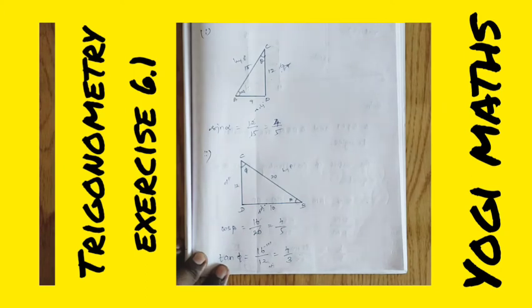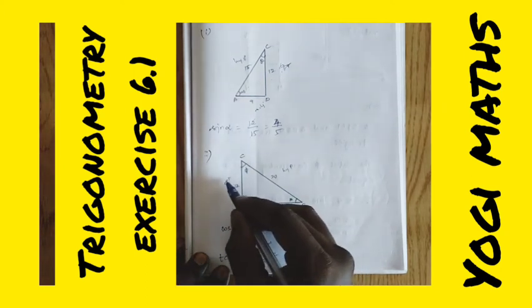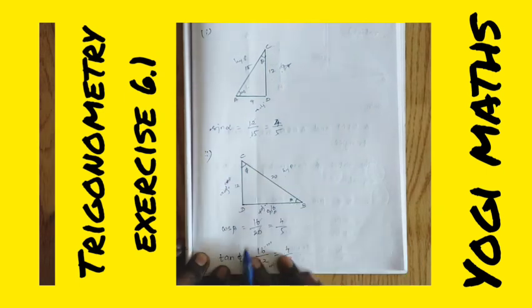For tan pi, we have the opposite side and adjacent side. The formula for tan pi is opposite by adjacent. The opposite value is 16 and the adjacent is 12. Using the times table, this is 3 times 4 equals 12 and 4 times 4 equals 16, which gives us 4/3. This completes the proof.